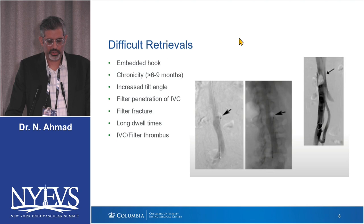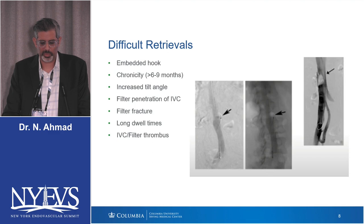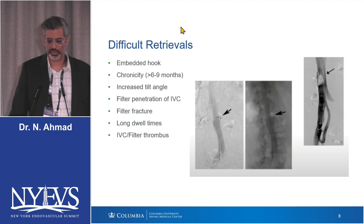What makes a difficult retrieval? It's usually patients with an embedded hook, chronicity greater than six to nine months — I usually say even longer, more than a year. Increased tilt angle can make it difficult; I find certain filters tend to tilt a lot easier than others. There's also filter penetration of the IVC, filter fracture, long dwell times, and IVC filter thrombus.